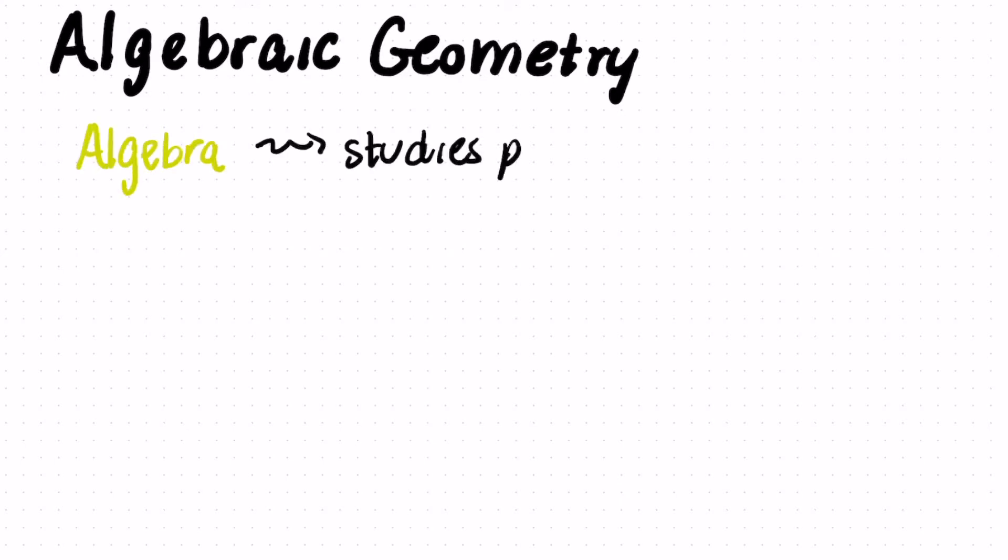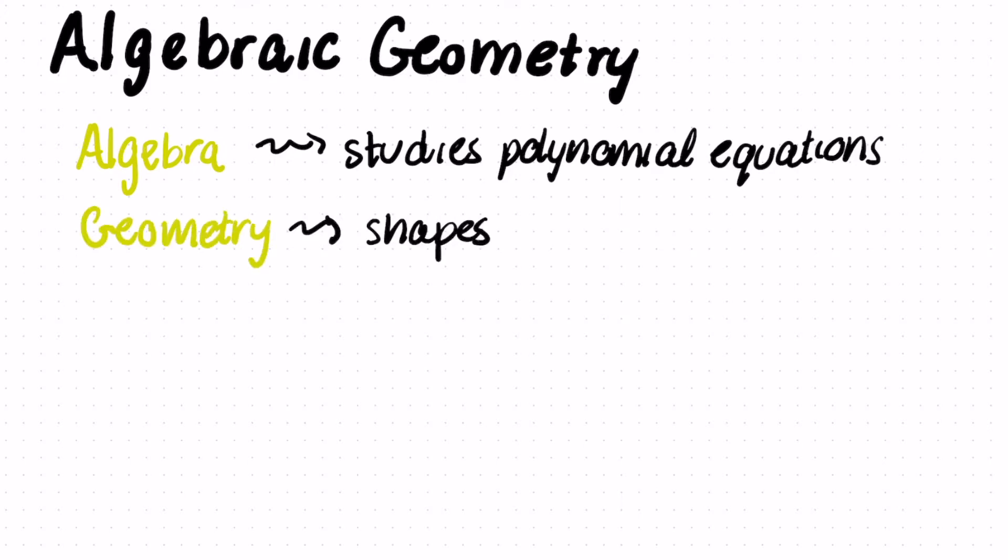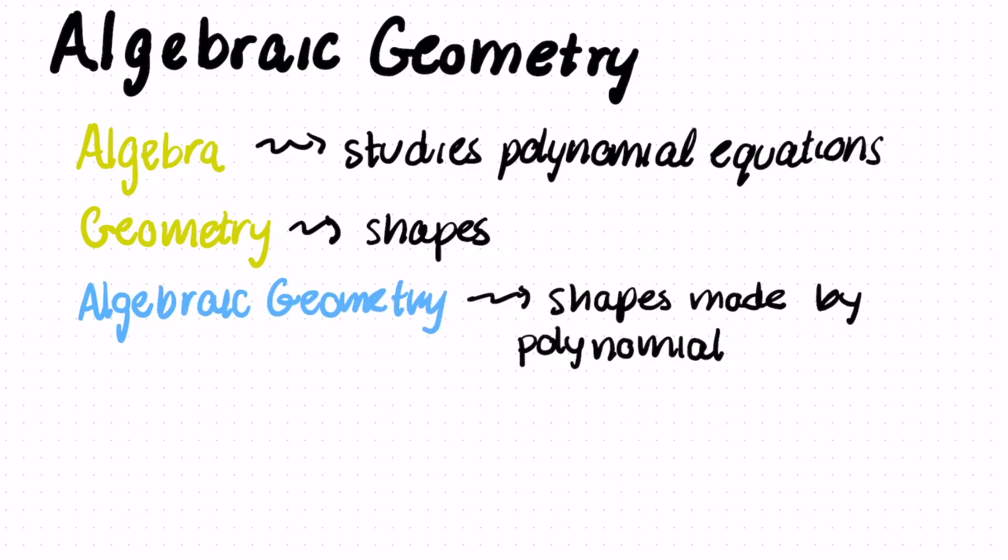The subject of algebra studies polynomial equations. If you don't know what a polynomial is, we'll get to that later. And geometry is the study of shapes. What algebraic geometry does is it studies shapes that are made by polynomial equations. Let's take an example.